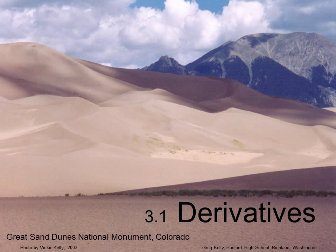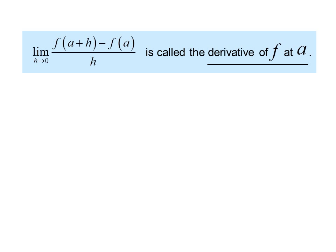Lecture 3.1: Derivatives. The photo is the Great Sand Dunes National Monument in Colorado. The limit as h goes to 0 of f of a plus h minus f of a over h is called the derivative of f at a.